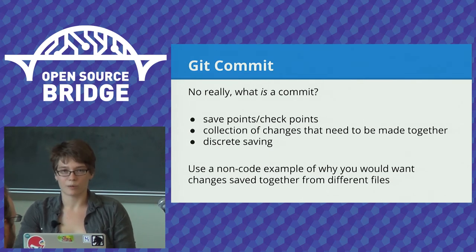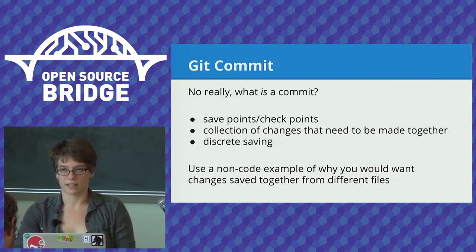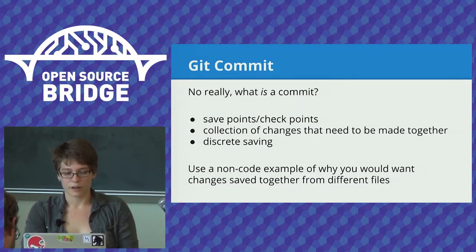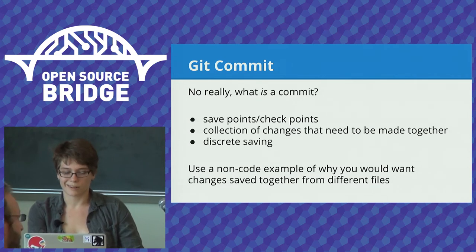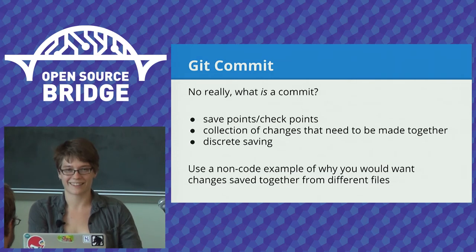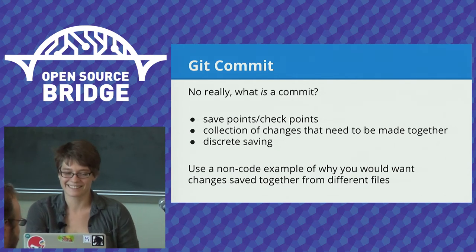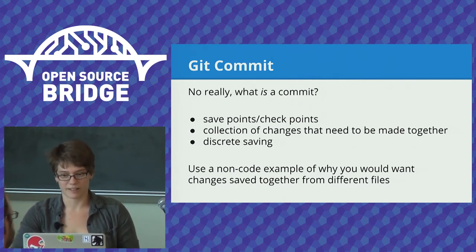Definitely talk about why you would want to save a bunch of changes from different files together. If they're new to code, try to pick an example that isn't code related. I personally like using the example of: you wrote a book based on Twilight and used all the original character names. You need to find-and-replace 'Bella' with 'Anastasia' across all files — that's an example of a time when you'd need to keep all these changes together.